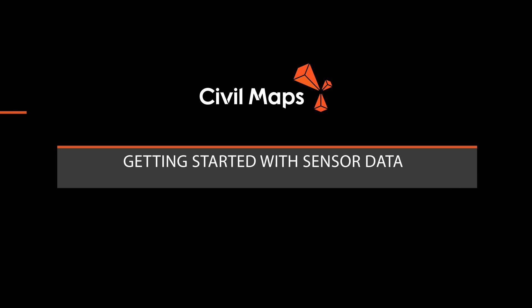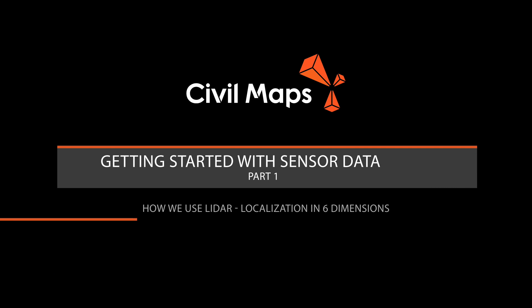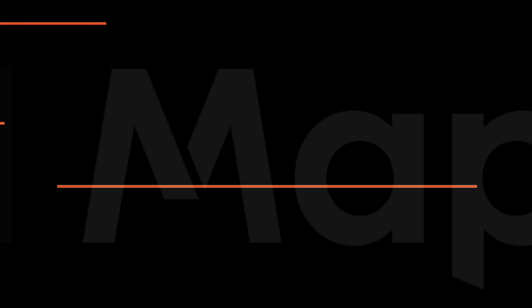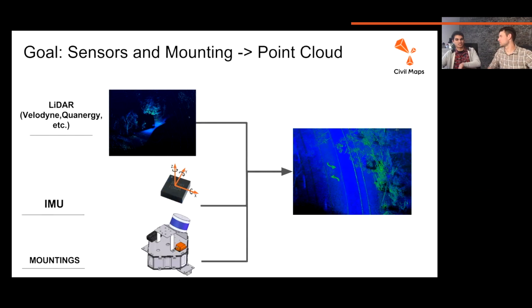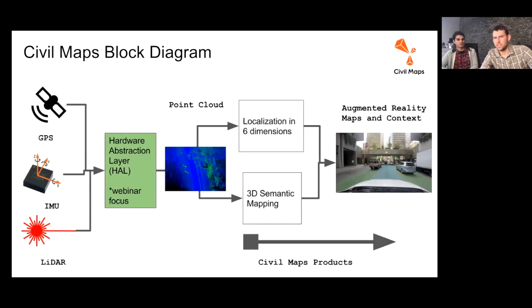We work in six dimensions because vehicle dynamics work in six dimensions. When you're turning or accelerating, you're rotating in all six dimensions — both translationally and rotationally. And to go back to this side, that's sort of what we focused on.